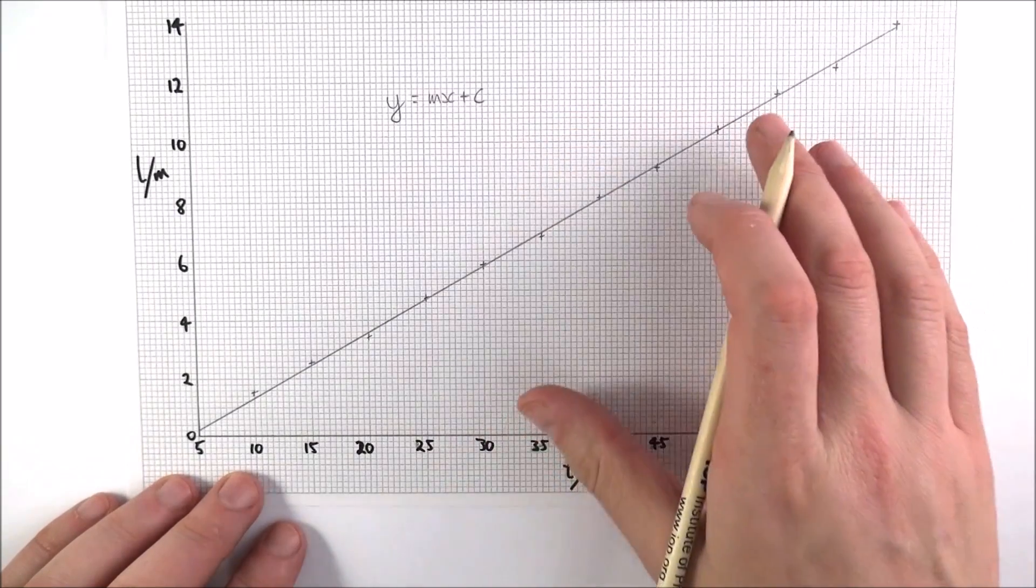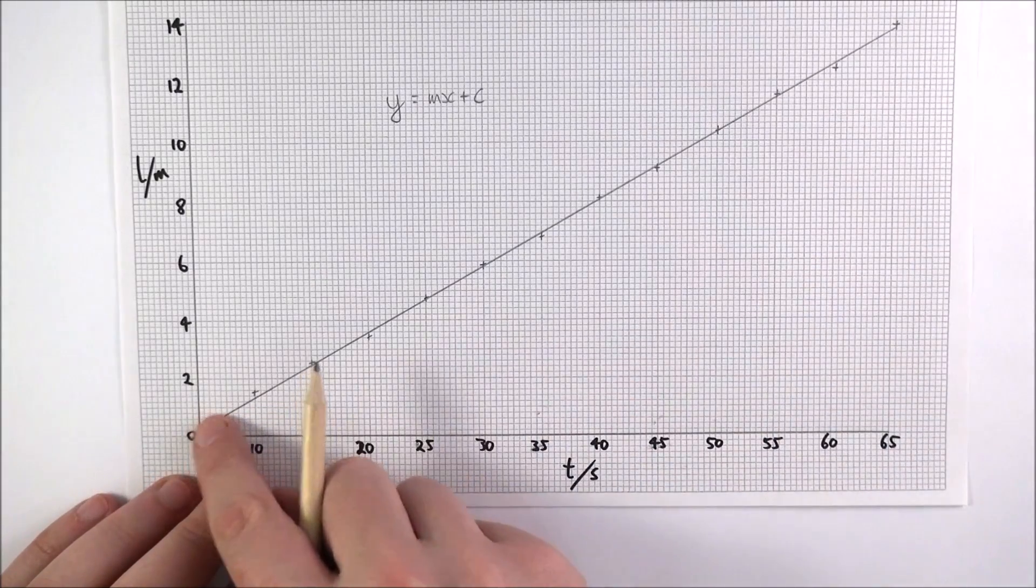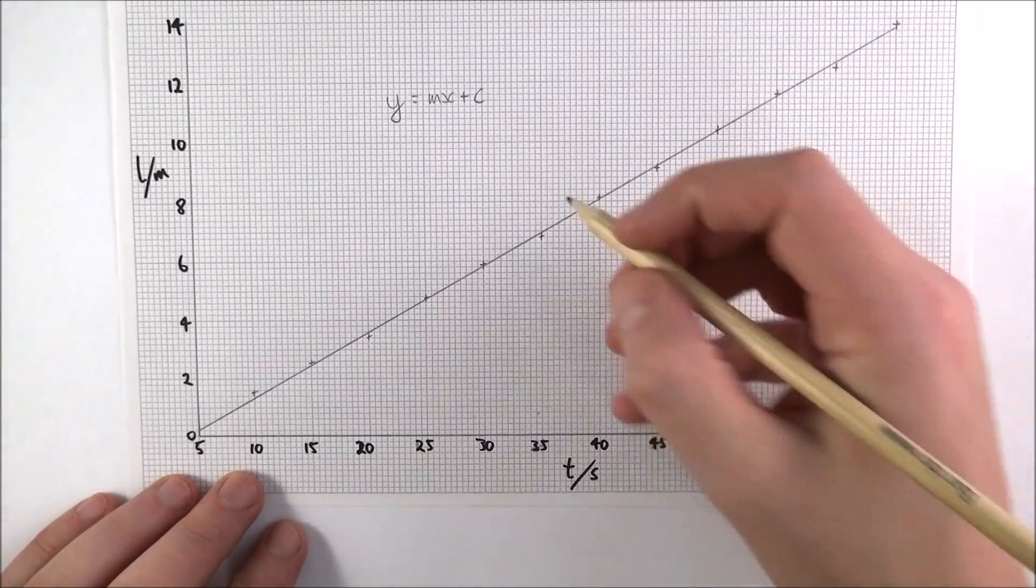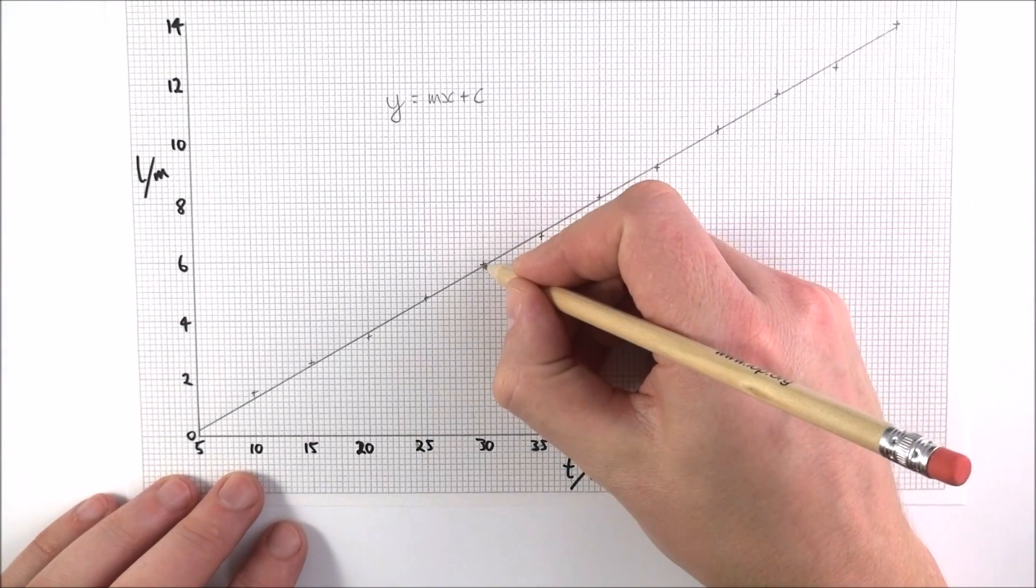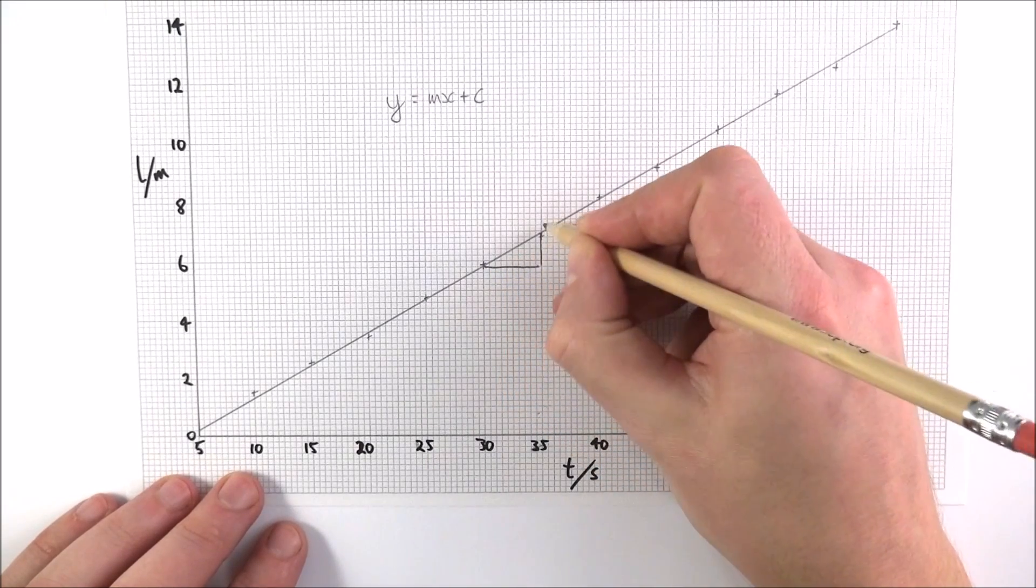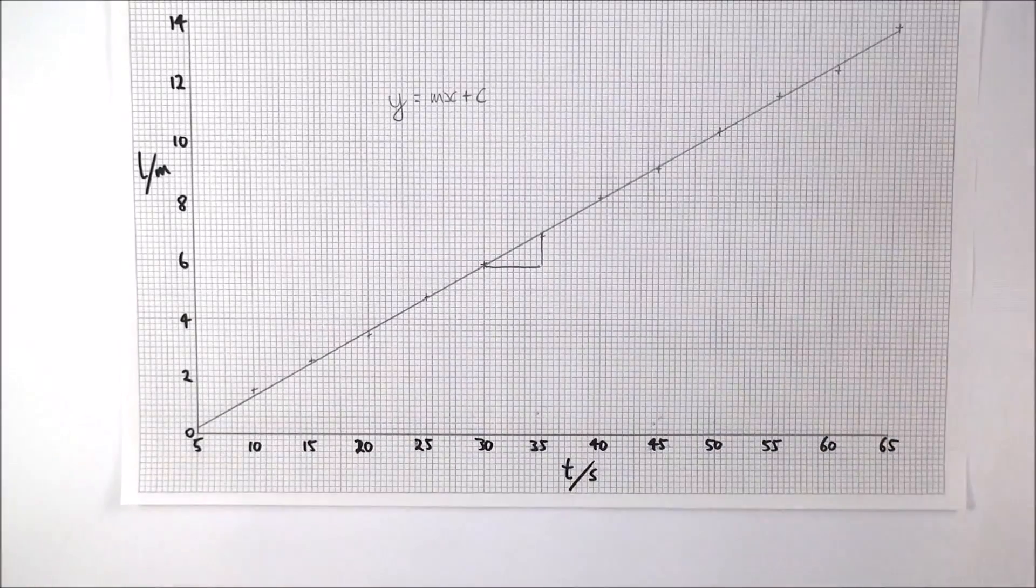And in order to work out the gradient, this is a method that you should use. First of all, we want to find the gradient of this line here. Now if you use maybe a small read-off, maybe you look at this value to this value, maybe draw a triangle and then use these values here to find the gradient. That isn't good enough, that's not the best way to do it.